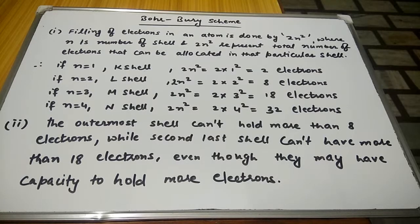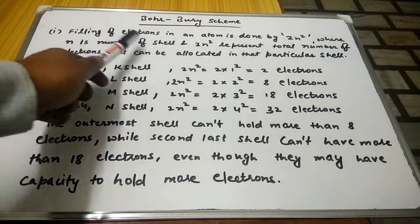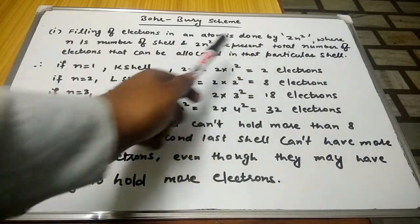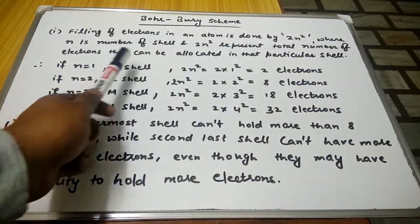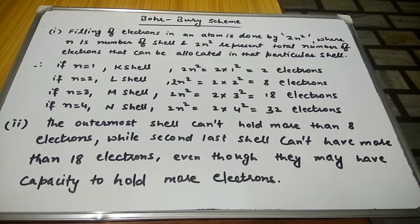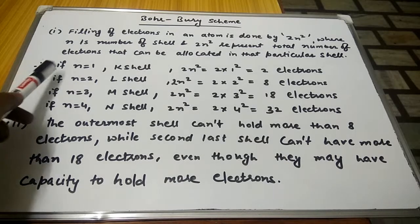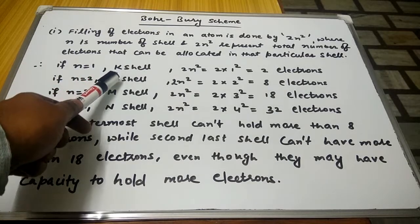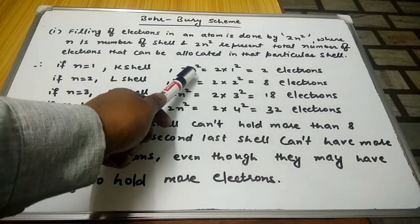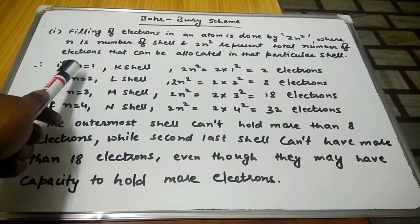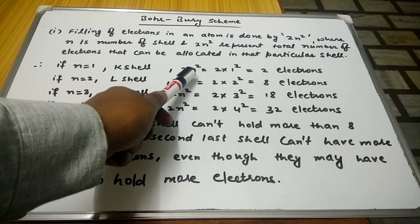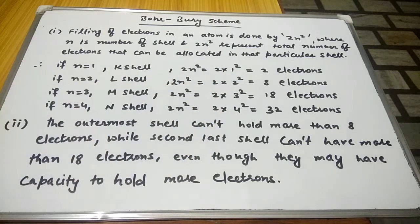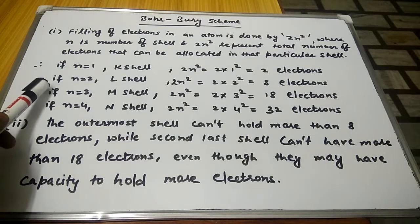Let us discuss Bohr-Bury's scheme. Number one: filling of electrons in an atom is done by 2n², where n is the number of shell and 2n² represents the total number of electrons that can be allocated in that particular shell. For example, if n is equal to 1, it is called the K shell, so 2 into 1² gives 2 electrons — we can accommodate only 2 electrons in the first K shell.